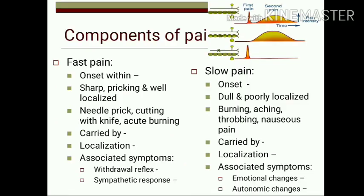Pain has two components: fast and slow pain. Fast pain starts within 0.1 second after stimulus whereas slow pain starts one second after stimulation. Fast pain is sharp, pricking, and well localized, whereas slow pain is dull and poorly localized. Examples of fast pain include needle prick or cutting with a knife; slow pain is burning, aching, throbbing, or nauseous pain. Fast pain is carried by A-delta fibers and slow pain by C fibers. Associated symptoms of fast pain include withdrawal reflex and sympathetic response — increased blood pressure, heart rate, and respiratory rate.